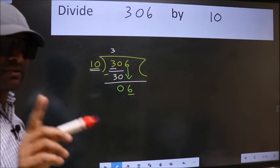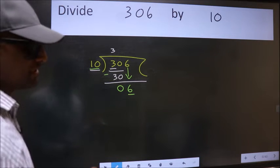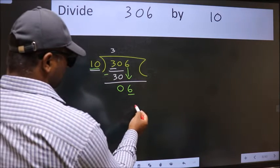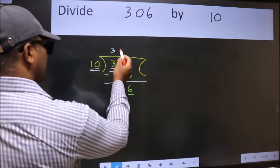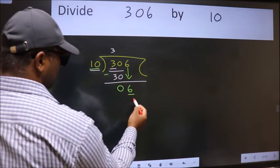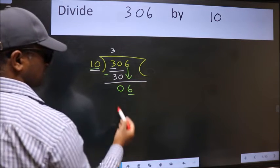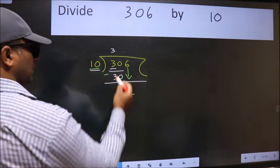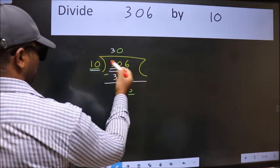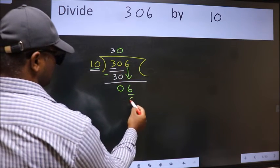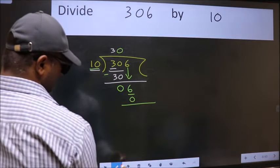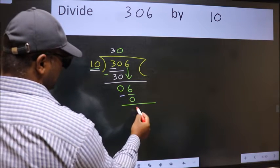Instead of that, what we should think of doing is which number should we take here. If I take 1, we will get 10, but 10 is larger than 6. So what we do is we take 0. So 10 into 0 is 0. Now we subtract. We get 6.